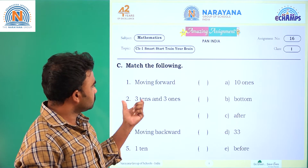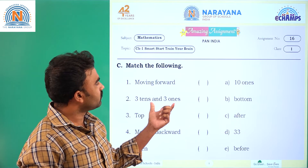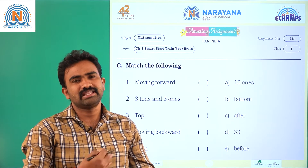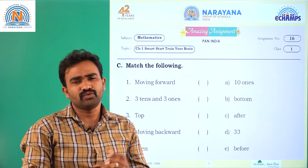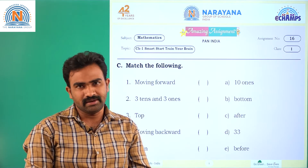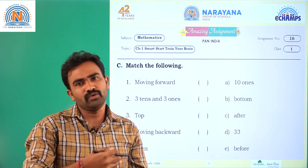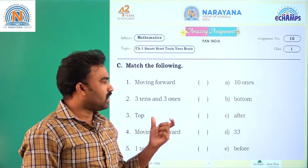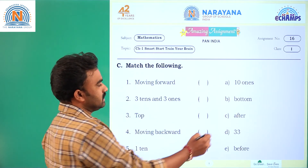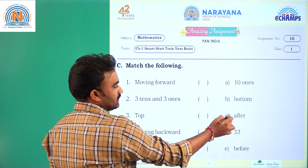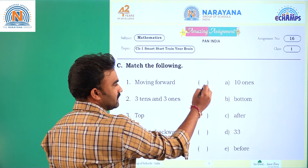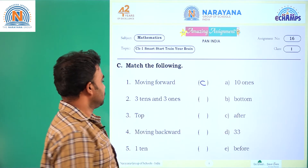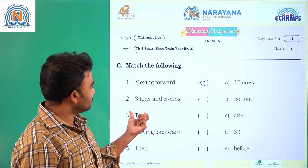First question: moving forward. Moving forward means finding the after number — we move forward to get the next number. The after number is at option C, so C is the answer.